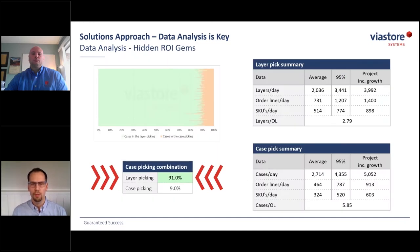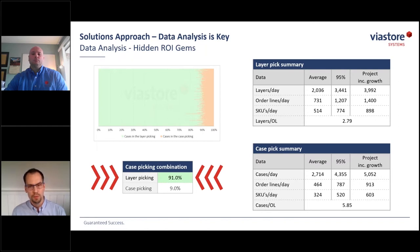When we looked closer at the less-than-full-pallet volume, we found the hidden gem that was key to this solution: 90% of all cases that were less than full pallet pick could be picked in full layer quantities. Automating full layer picks was much more cost-effective than automating individual case picking, resulting in a solution that greatly reduced the customer's dependency on manual picking while not requiring the same level of investment as automating all individual case picking.